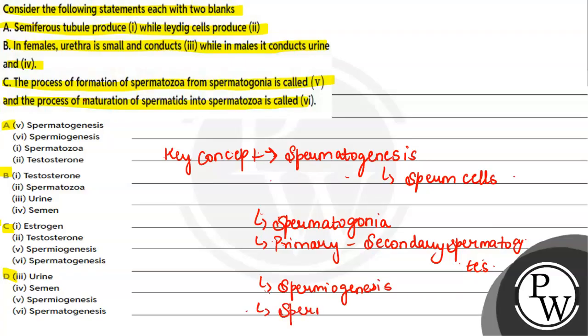Next, if we're talking about spermiogenesis, spermiogenesis generally is seen that mature sperm cells will be released.